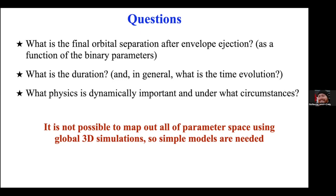We do simulations, but we're always thinking: what is this really saying? Is there a simpler way to model this? Researchers interested in population synthesis of binary systems need to model thousands of systems to predict gravitational wave event rates, and there's no way to do thousands of full 3D simulations. The holy grail is to develop a simple model that can predict the outcome of common envelope evolution from the initial parameters.